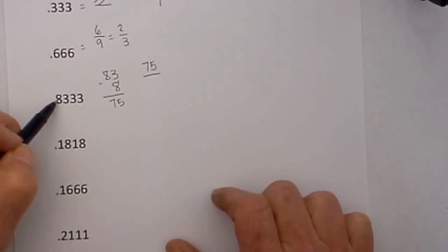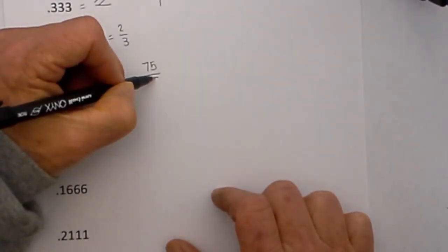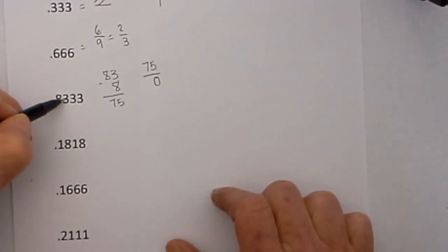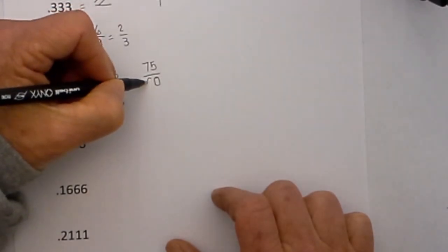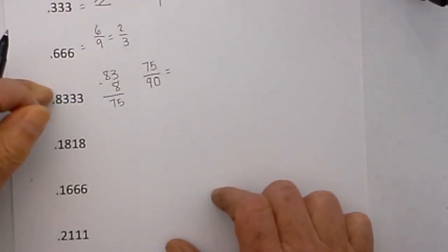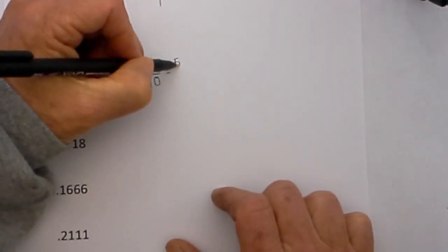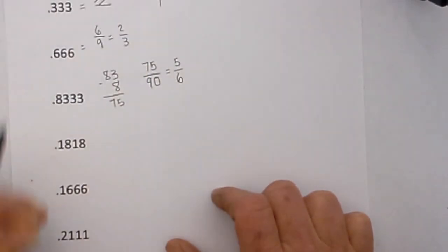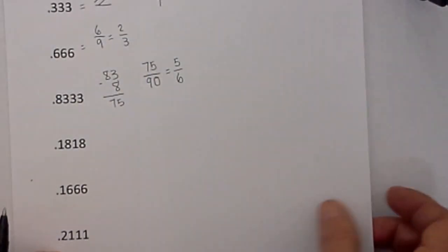And then we have one non-repeating number so I will write zero for that and then we have repeating numbers of 3 and that is 90. 75 over 90 you can reduce this down to 5 sixths.